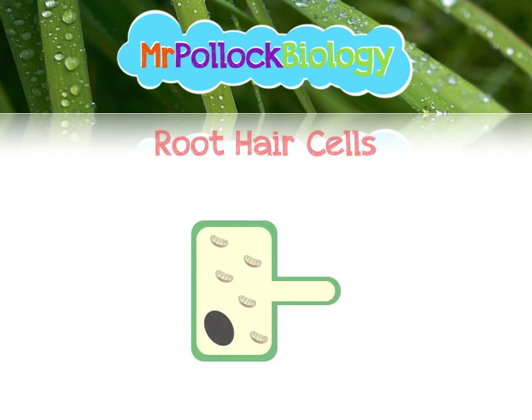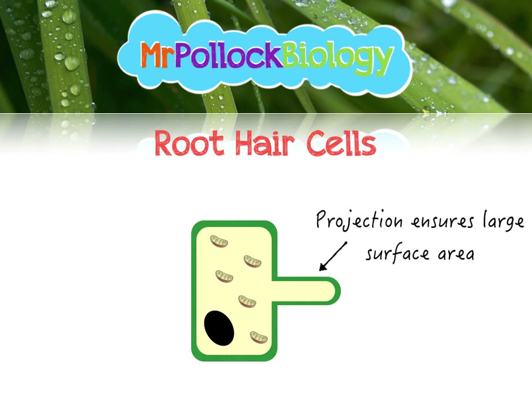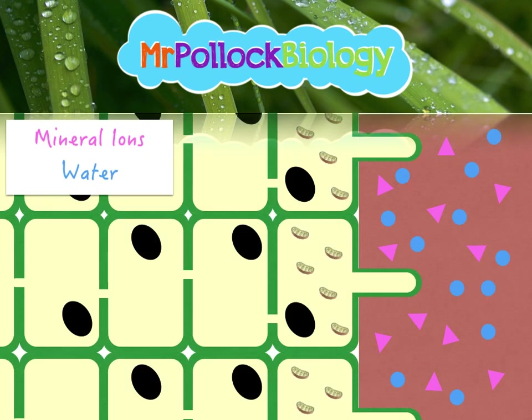Let's look at the root hair cells. You'll have seen these before, albeit probably without the mitochondria. You've got that huge surface area provided by the hair-like projection. And then we have the mitochondria to supply a large amount of ATP through aerobic respiration. We'll see why that's important just now, as we look at how water gets from the soil into the root hairs — because this isn't just a passive process. What we've got is a clever manipulation of the water potential of the root hair cells by the plant.